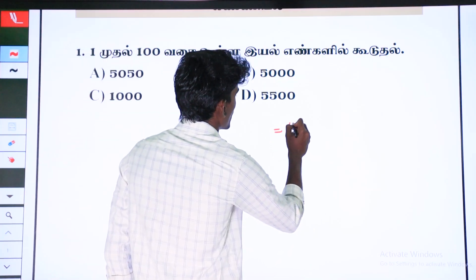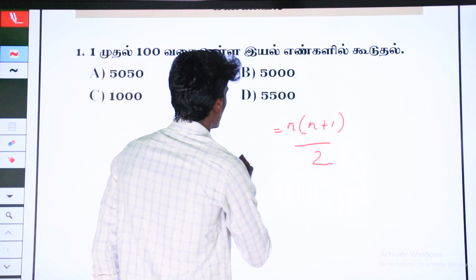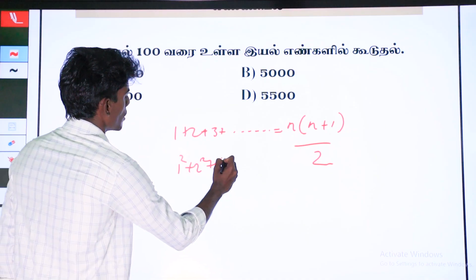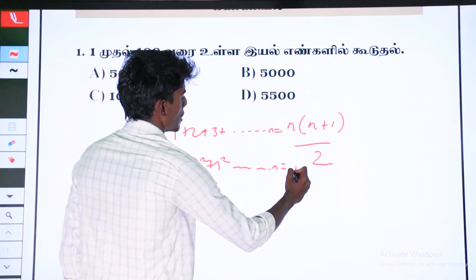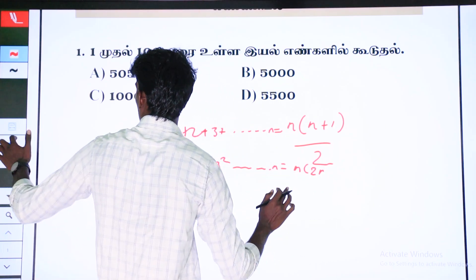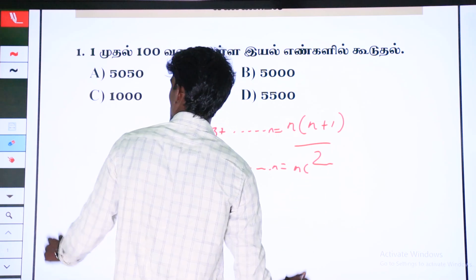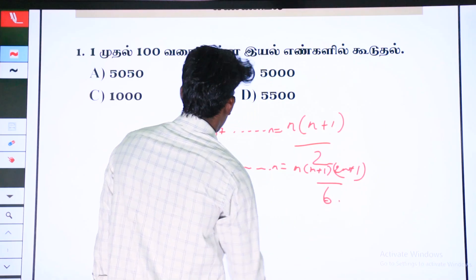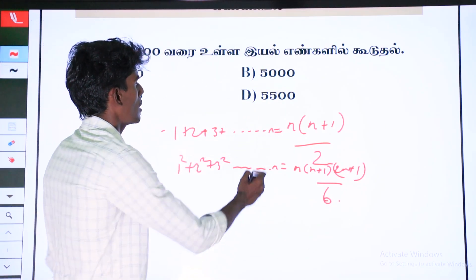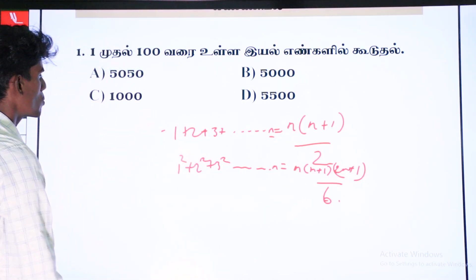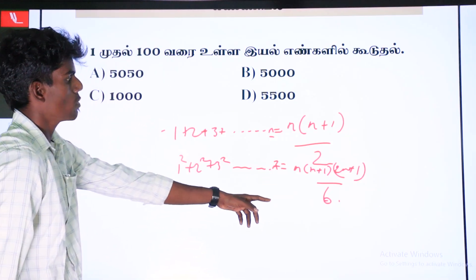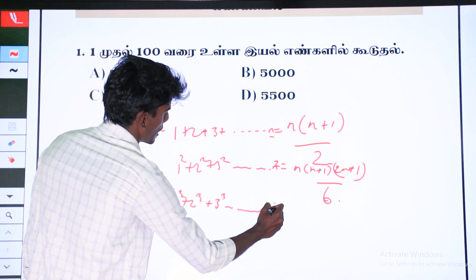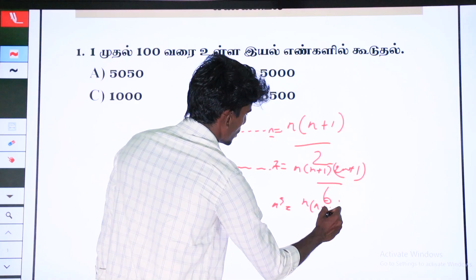The formula is n into n plus 1 by 2. This is 1 plus 2 plus 3. One square plus 2 square plus 3 square. This formula is n into n plus 1 by 2.